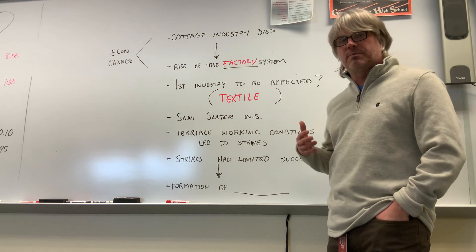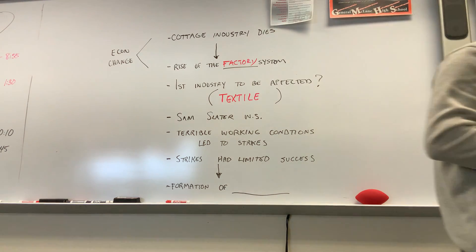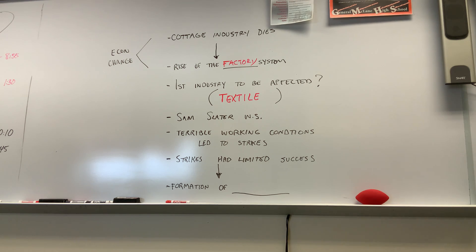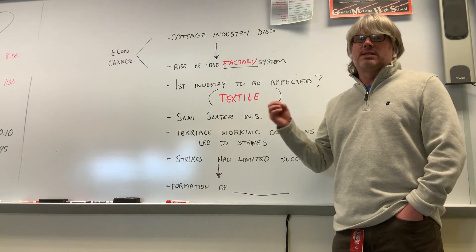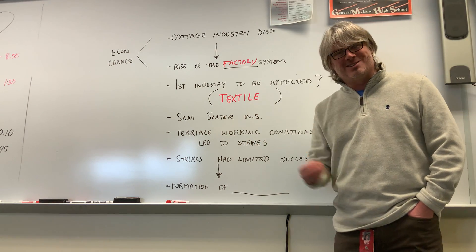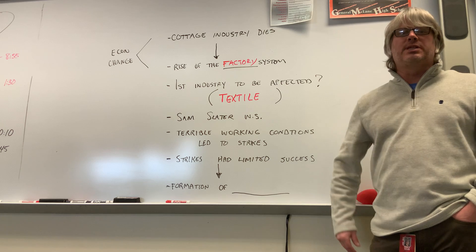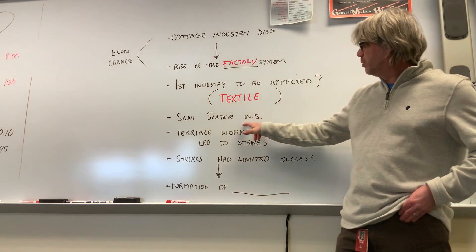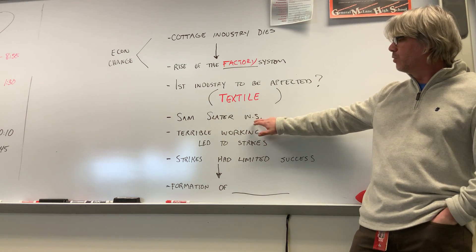The first industry to be affected was the textile industry, but eventually this new economic reform would happen across all different types of businesses. If you're going to talk about the beginning of the textile industry in America and the switch that was happening, you have to talk about Sam Slater. Your book doesn't mention Sam Slater, which is why I had you read that short biography of him and answer those questions. So there's a reminder to look at the Sam Slater worksheet.